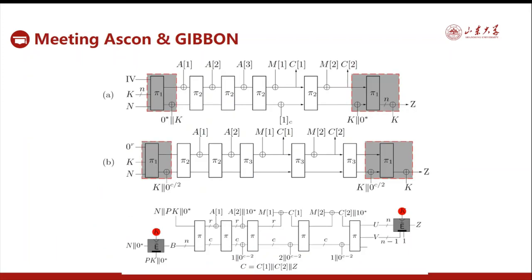Interestingly, to some extent, our design meets ASCOR and JIBAN. We all use the duplex as the main processing part and all use key functions for initial and final phases. But ASCOR and JIBAN are purely permutation-based, while we use one more primitive — the tweakable block cipher — for better resistance to decryption leakages.